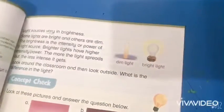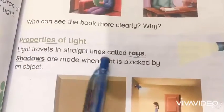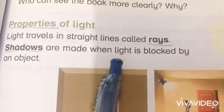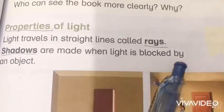Light travels in a straight line, called rays. Shadows are made when light is blocked by an object.